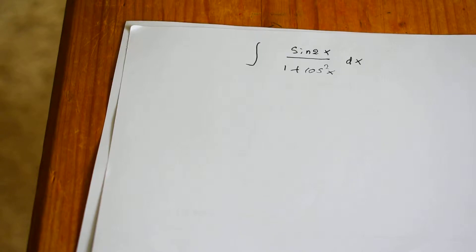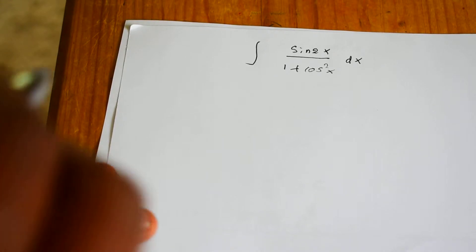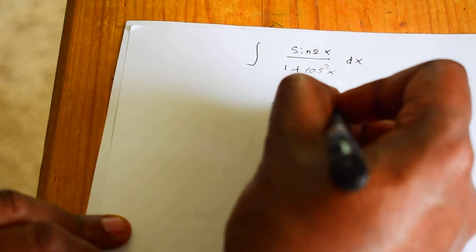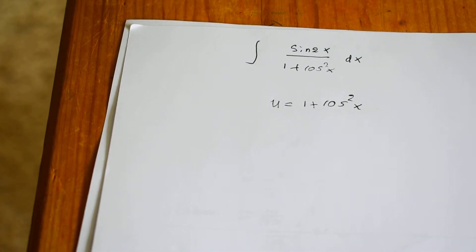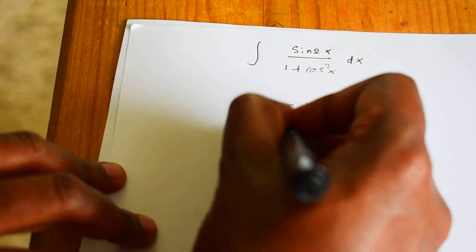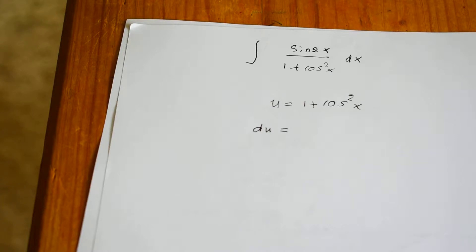If you choose u as sine 2x, then the derivative of sine 2x will be cosine 2x times 2, but you won't be able to write cosine squared x in terms of that. So what you can do is choose u as 1 plus cosine squared x. The derivative of 1 is 0, and you can use the chain rule to find the derivative of cosine squared x.